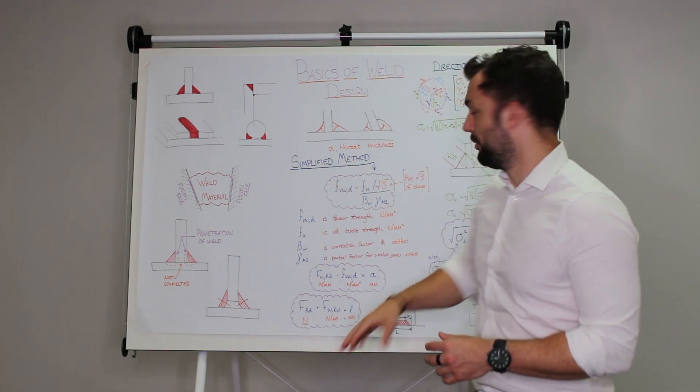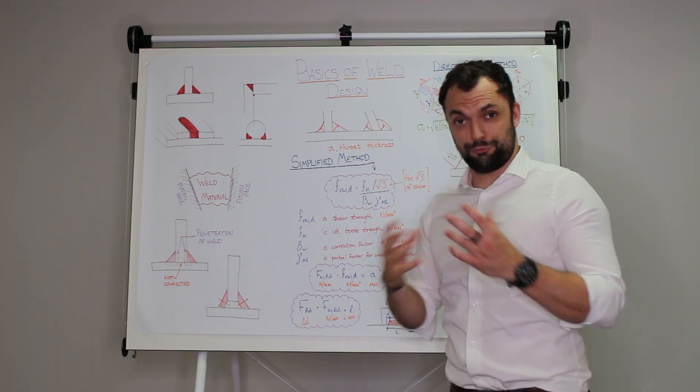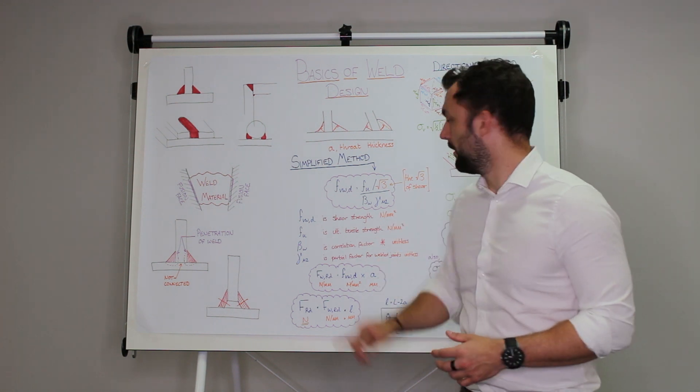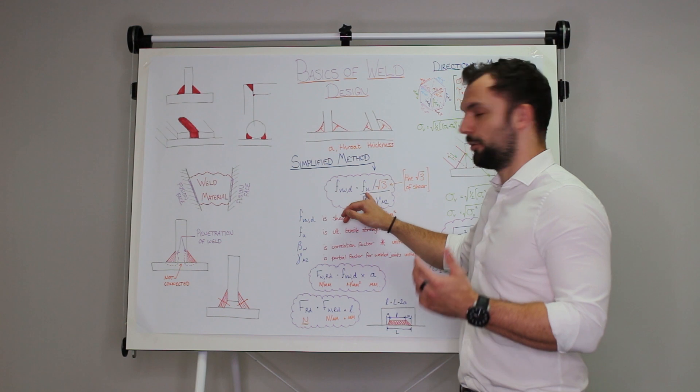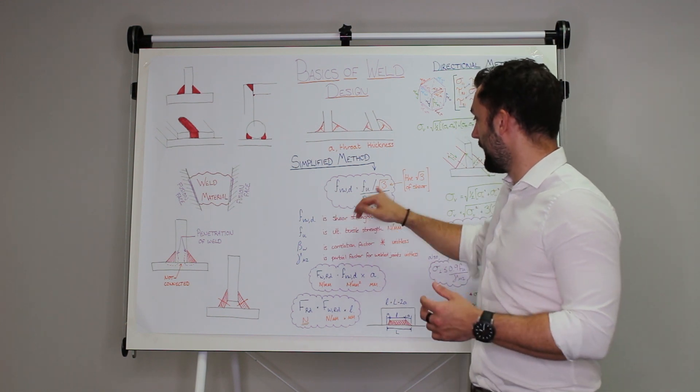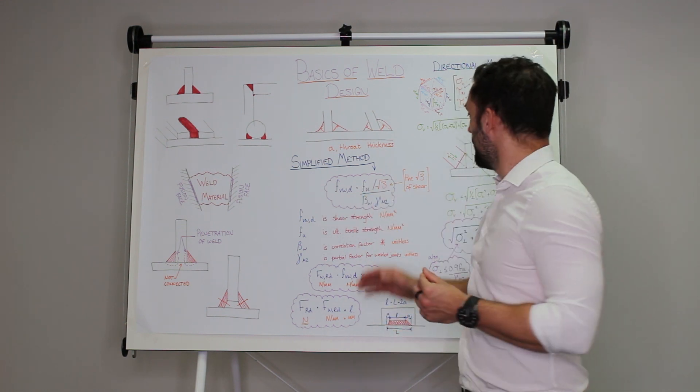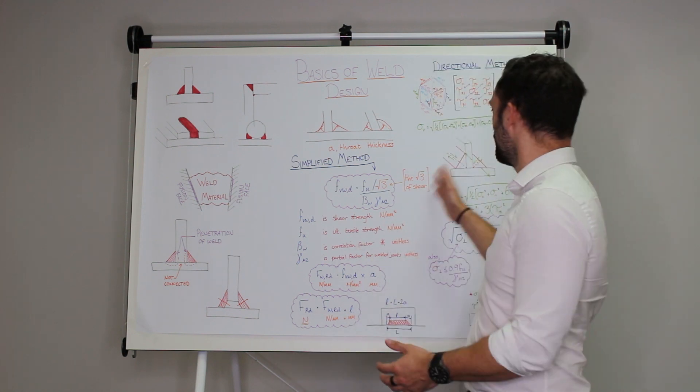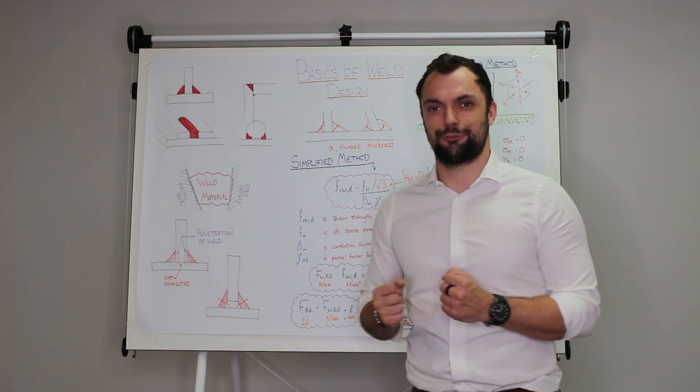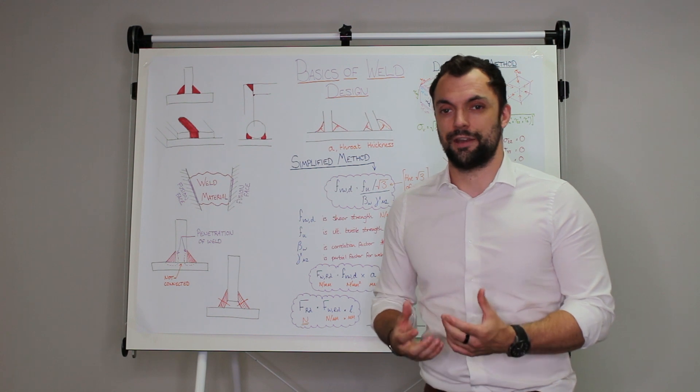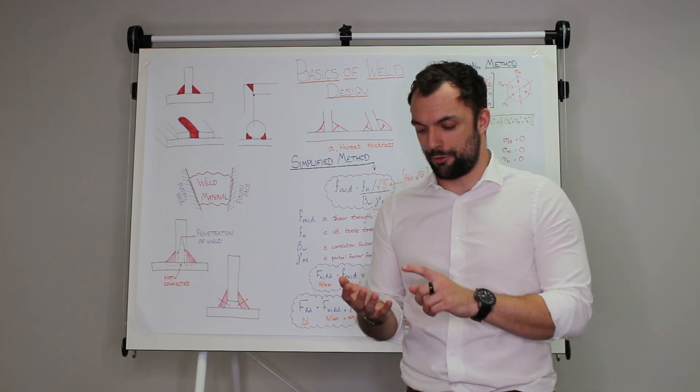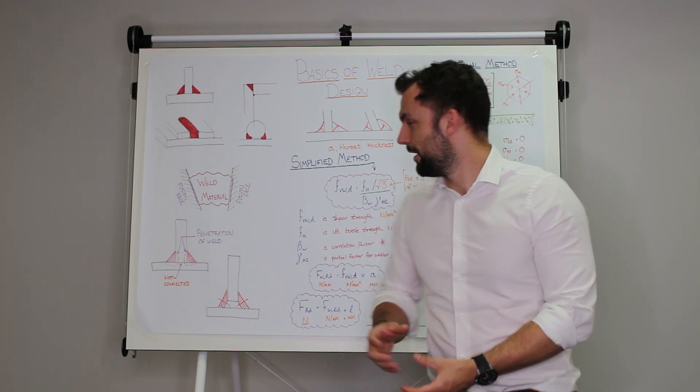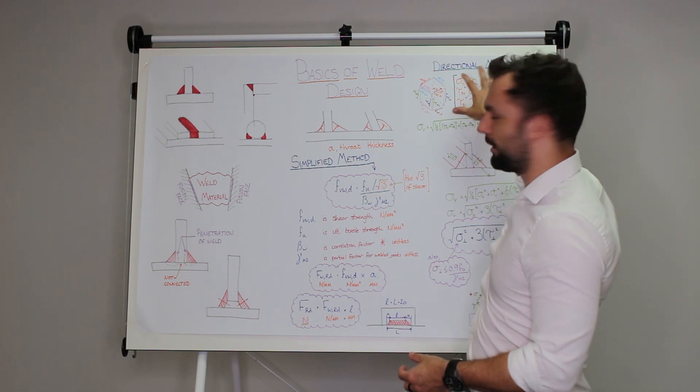So coming to the simplified method you multiply that throat thickness by the strength of the welded material, the shear strength in newtons per square millimeter. And the way that we work out this shear strength is we multiply the ultimate strength by a factor of one over root three. Now you might recognize this root three factor, it comes in every time we have shear. I call it the root three of shear. Every time there is shear stress this root three comes in. If you remember back there was a drawing board we talked about the Cauchy stress tensor and von Mises yield criterion and that explains where this root three comes from.